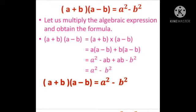Now let us multiply the algebraic expression and obtain the formula. (a + b)(a - b) = a(a - b) + b(a - b) = a² - ab + ab - b². The terms -ab and +ab cancel each other. We get a² - b². Therefore, (a + b)(a - b) = a² - b². This is the new third formula of expansion from this lesson.